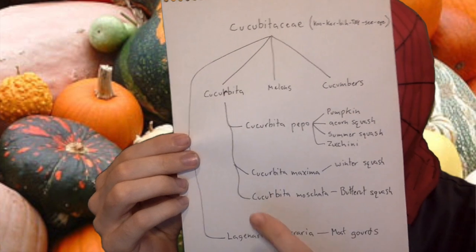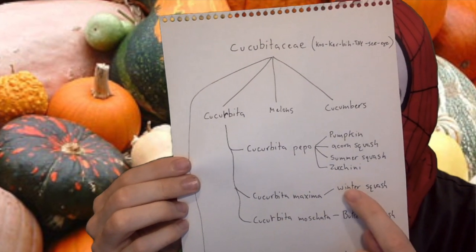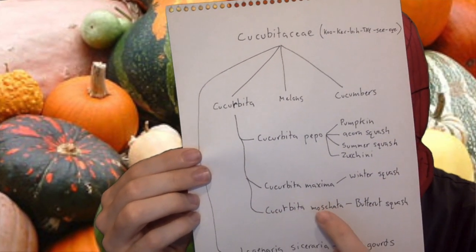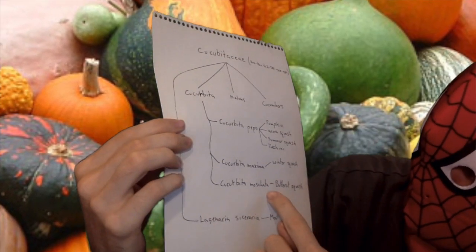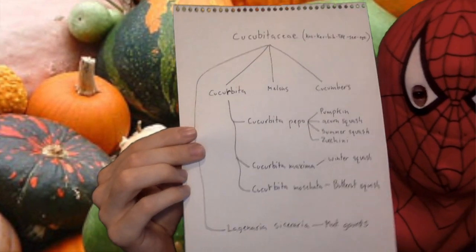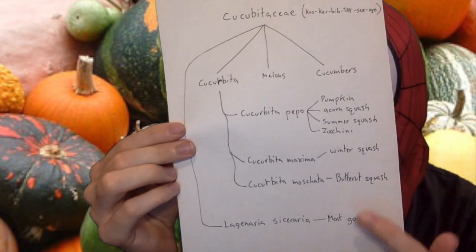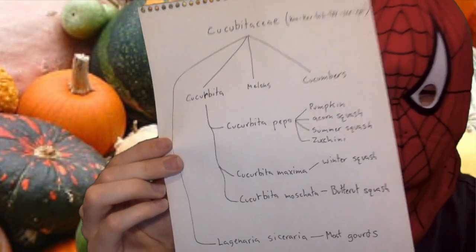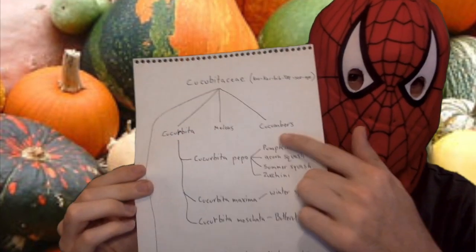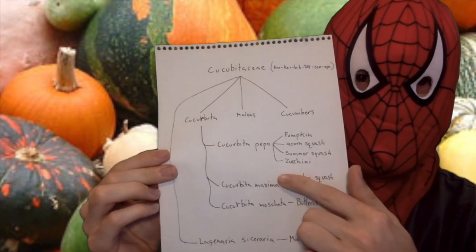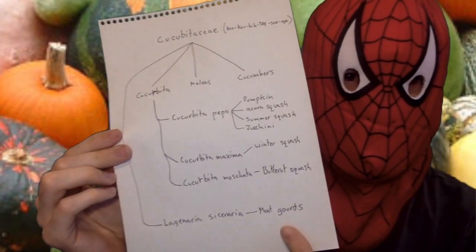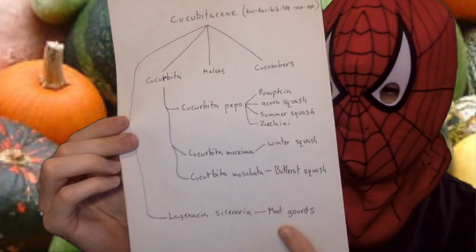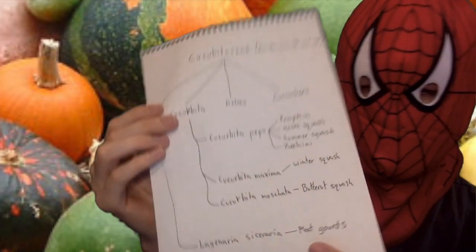Then you have Cucurbita maxima, which is the winter squash, and Cucurbita moschata, which is the butternut squash. These are mostly fleshy squashes and pumpkins, and the hard-shelled ones — well, those are most of the gourds that you know.